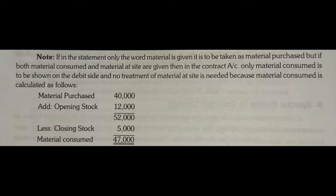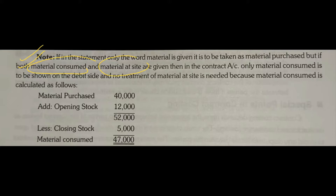The concept says: if you have material purchased, or only material is given — if in the statement only the word 'material' is given — then it is to be taken as material purchased. We will call it material purchased and record it on the debit side. Now the problem is that when you have not written material, but two things are given — material consumed and material at site — then how do we record these two things?